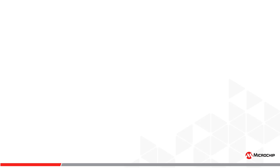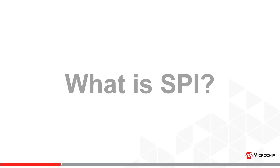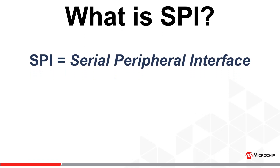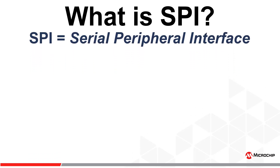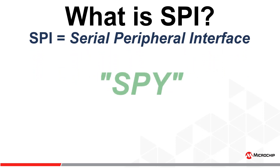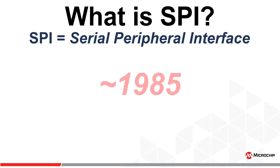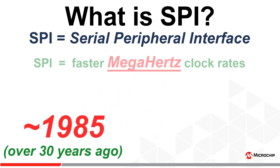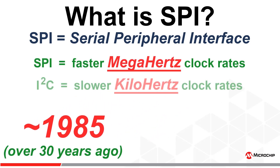Hello and welcome again to Microchip's memory technology series. So what's SPI? SPI is an acronym for Serial Peripheral Interface. Hardware folks will refer to the interface as SPI, and software folks will tend to say SPI. SPI was created in the mid-1980s to address the need for faster throughput speed over the existing I2C protocol.